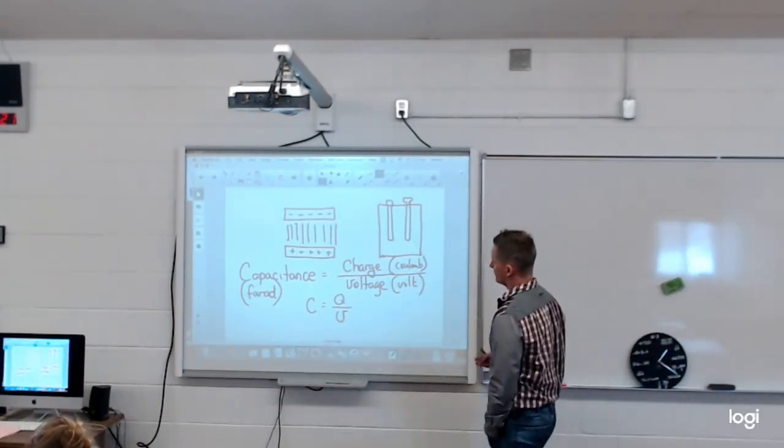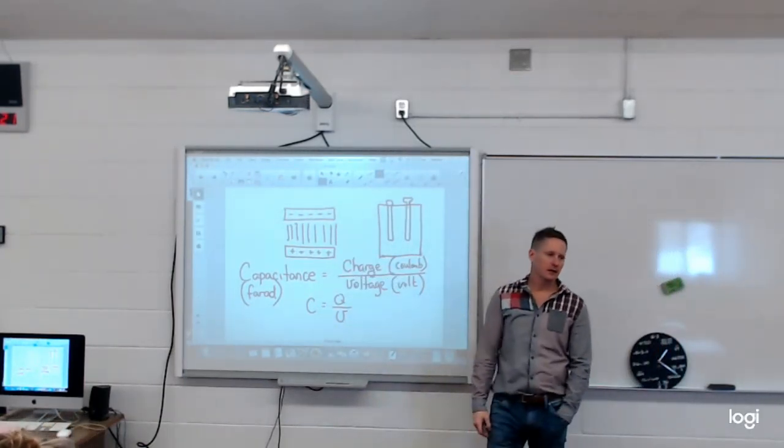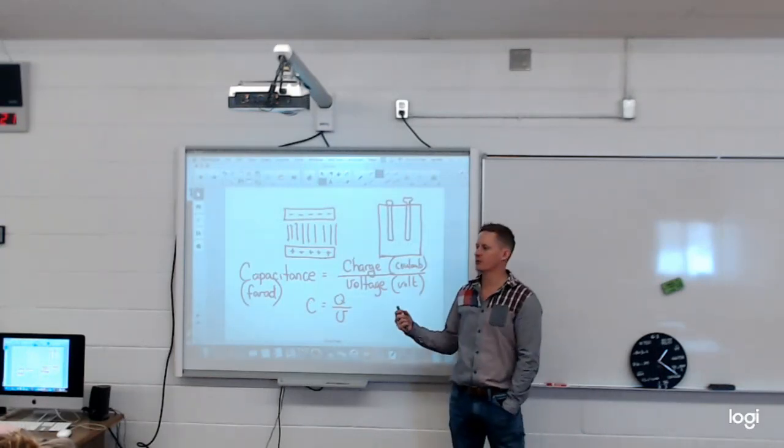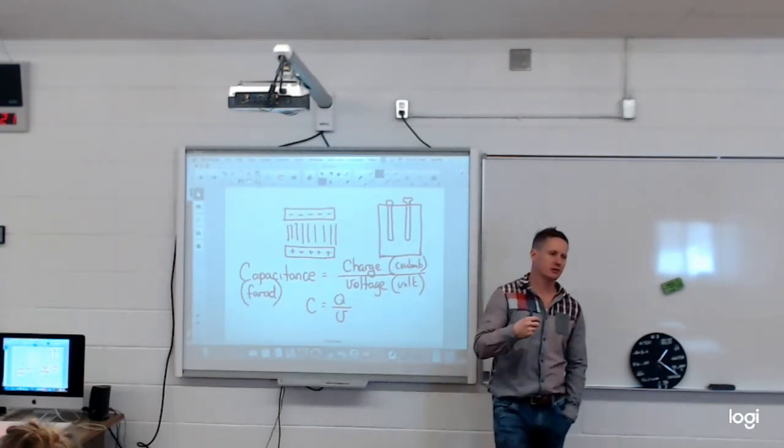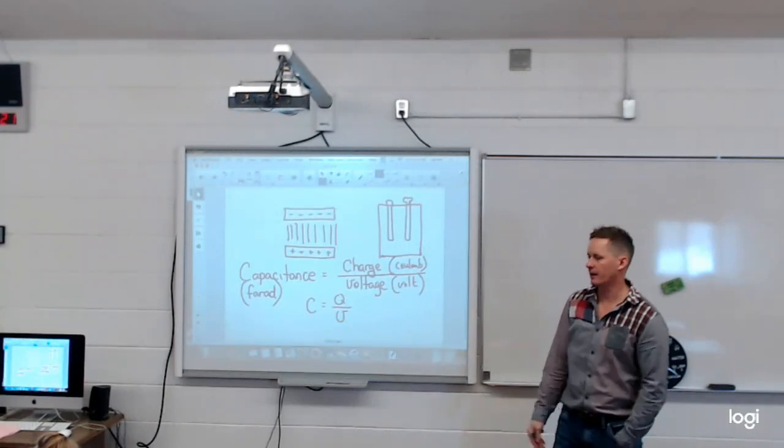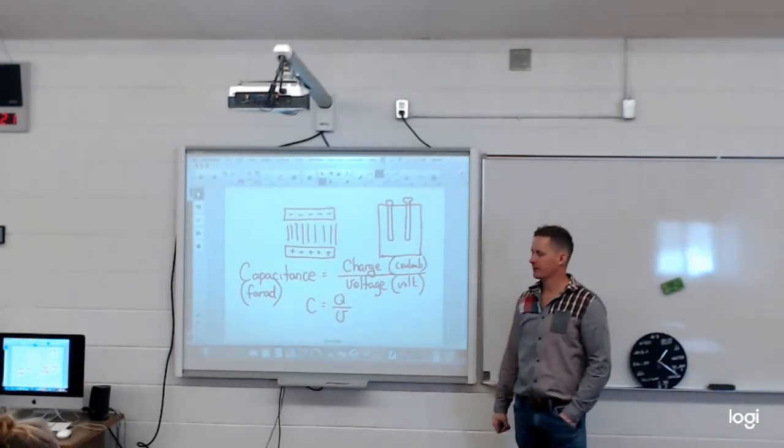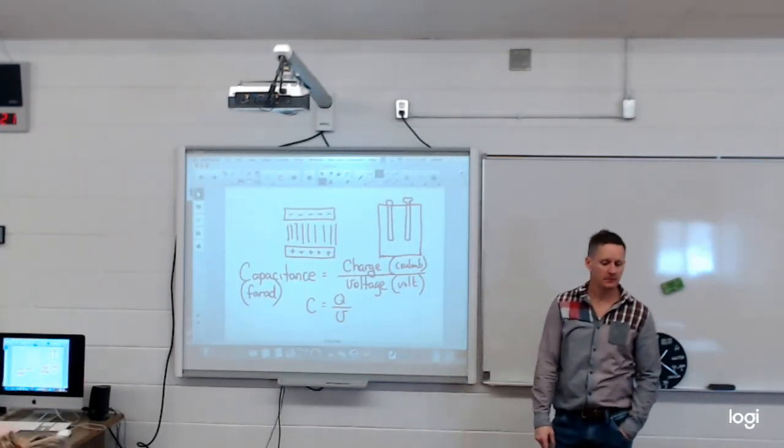So one farad would be equivalent to one coulomb for every one volt. C is equal to Q over V. And this is where it all starts. The capacitor is what we store the energy in, the electrons in, in order to create your electricity, create your electron flow.